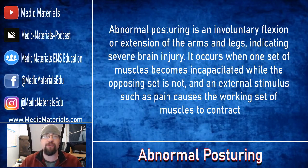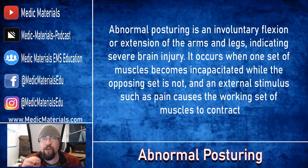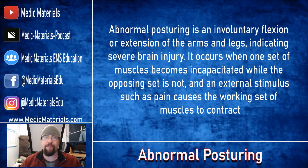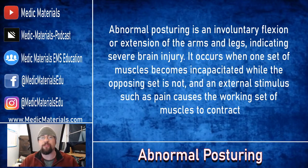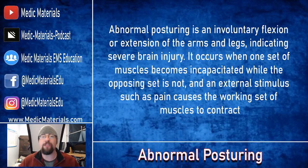Abnormal posturing is defined as an involuntary flexion or extension of the arms and legs indicating severe brain injury — that is absolutely key to remember. It occurs when one set of muscles becomes incapacitated while the opposing set is not, and an external stimulus such as pain causes the working set of muscles to contract.